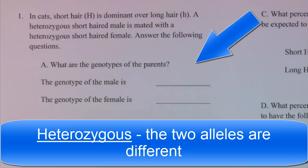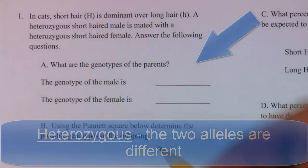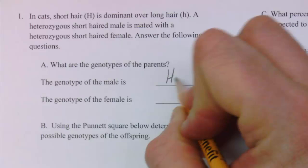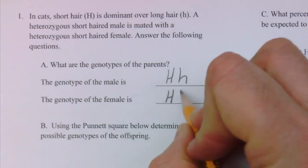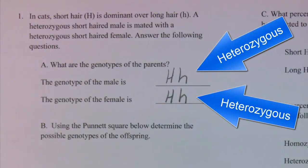Heterozygous means that the parents have one of each of the two alleles, in this case a big H and a little h. So the male has a big H and a little h and the female has the same genotype which is heterozygous, a big H and a little h.